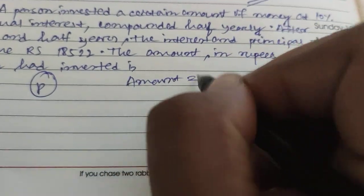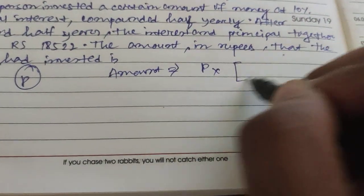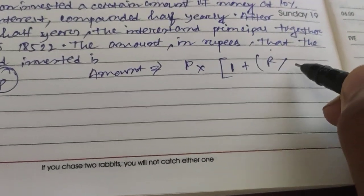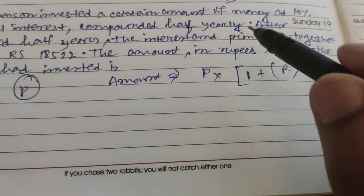It will be P into 1 plus r by 100, but it is half-yearly, so the denominator becomes 2 into 100,